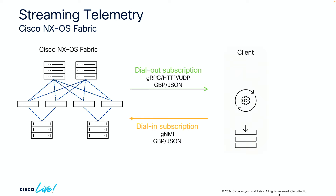For Nexus OS, we support two different kinds of streaming telemetry. For dial-out, we can use gRPC, HTTP, or UDP to stream raw data out of Nexus OS. We also support dial-in, using gNMI to dial into a switch, tell it what kind of data you need, and have it stream that back. That's the streaming telemetry on Nexus OS.